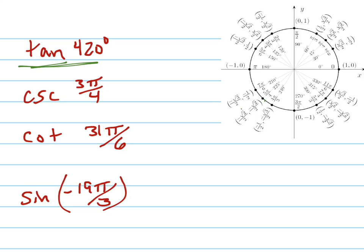So 420 degrees. If I look at my unit circle, 420 is, there's 360. So I need to go another 60 degrees to get to 420. So that's the same as the tangent of 60 because that's a reference angle.